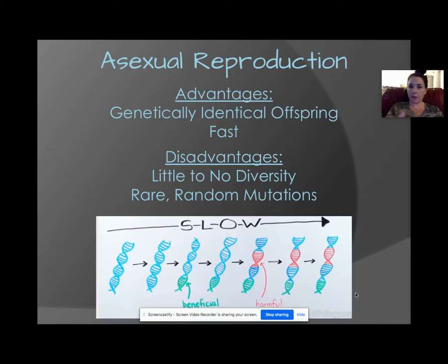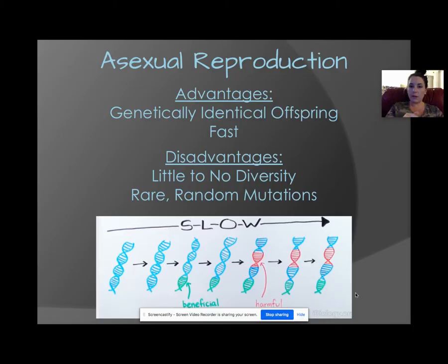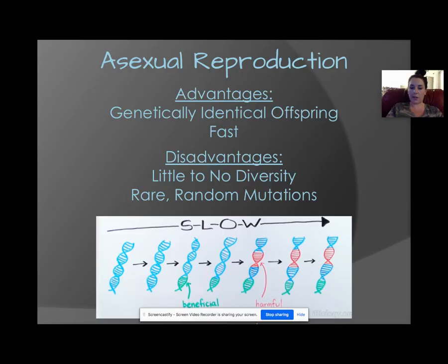In asexual reproduction, the advantages are genetically identical offspring, which can sometimes be very good, and it happens very quickly through the process of mitosis. The disadvantages are little to no diversity — the opposite of sexual reproduction — and sometimes diversity is introduced only through rare and random mutations.